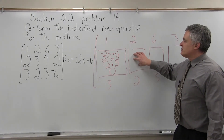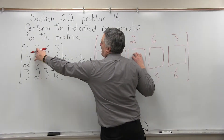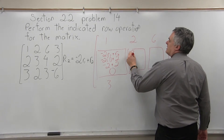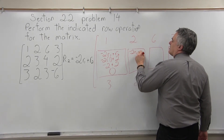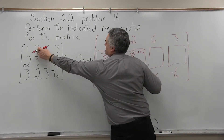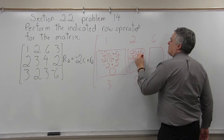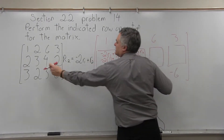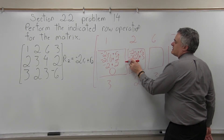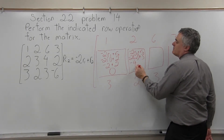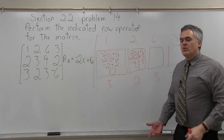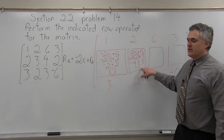Now in the next box, we do the same process but with the values in the y position. The equation is negative 2 times row 1 plus row 2. Negative 2 times what's in row 1 in the y position is negative 2 times 2, and what's in row 2 is 3. So negative 2 times 2 is negative 4, plus 3 gives us negative 1. The final result for that box is negative 1.